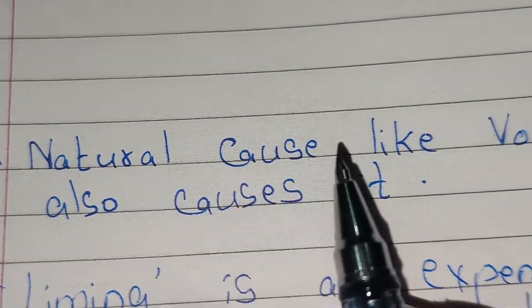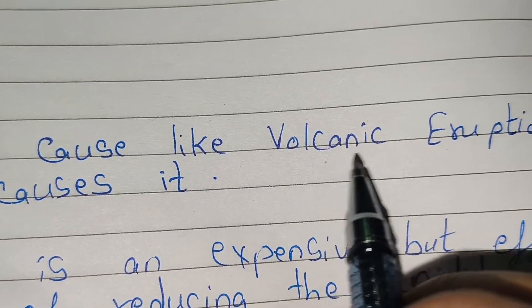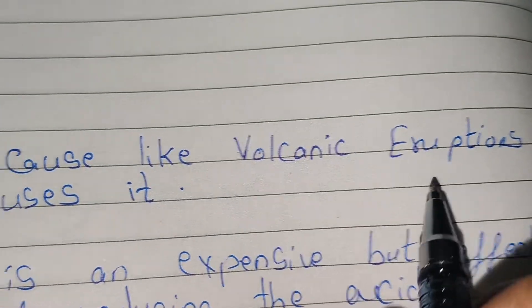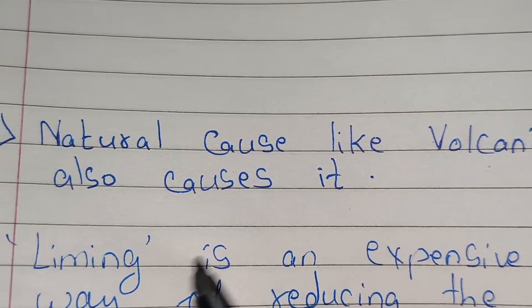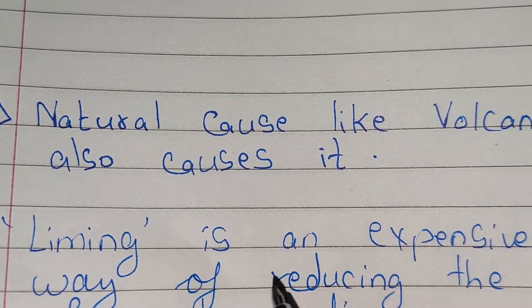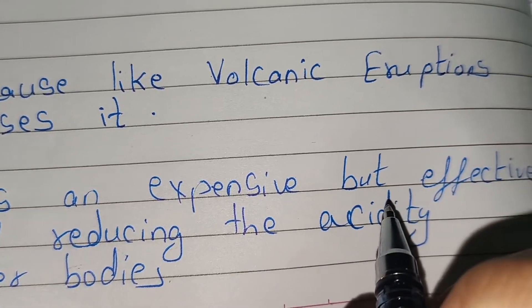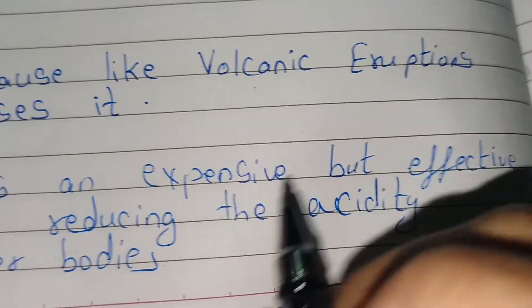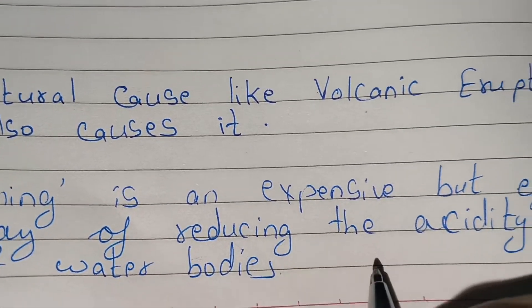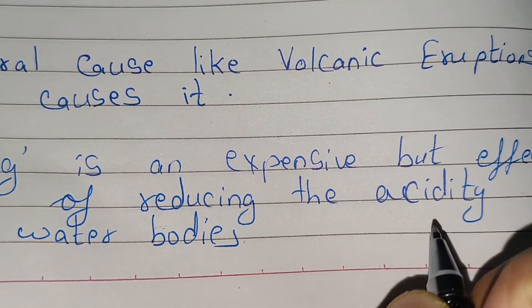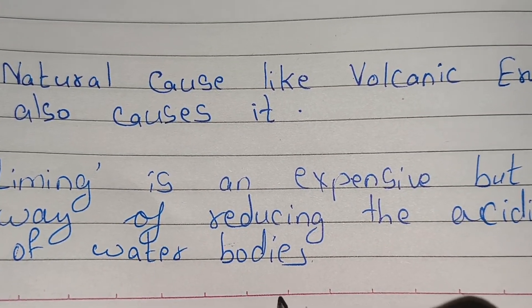Natural causes like volcanic eruptions also cause acid rain. Liming is an expensive but effective way of reducing the acidity of water bodies.